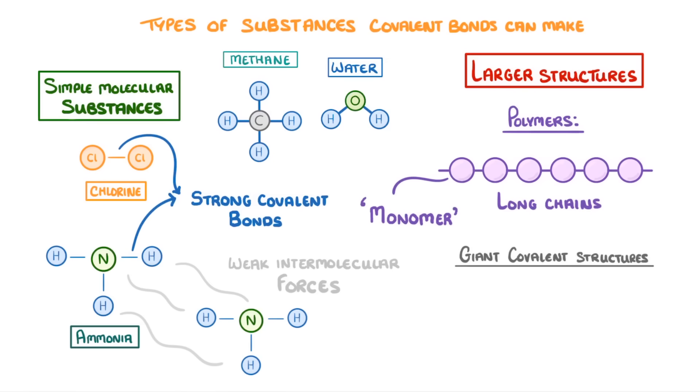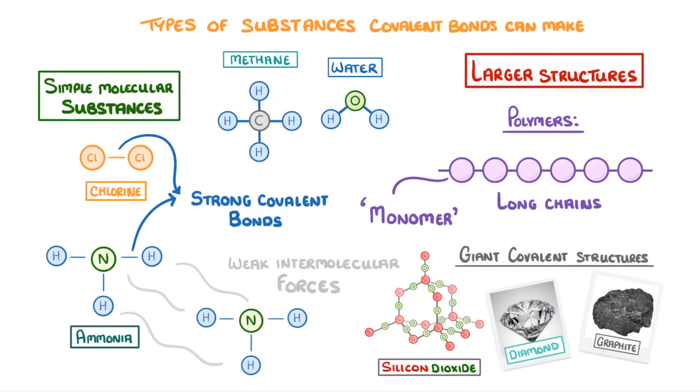Meanwhile, giant covalent structures are things like silicon dioxide, diamond, and graphite,